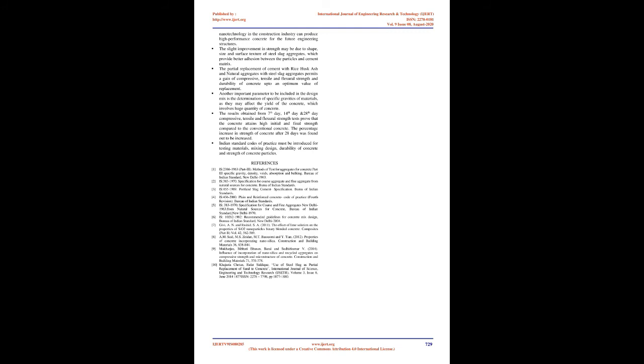3.7 Compressive Strength: The compression test is carried out on cubical or cylindrical specimens. Prisms are also sometimes used, but are not common. The end parts of the beam are left intact after failure in flexure and, because the beam is usually of square cross section, this part could be used to determine the compressive strength. Compressive strength equals P/A.